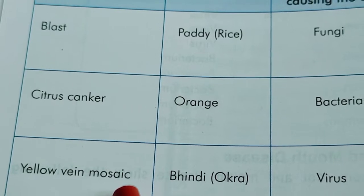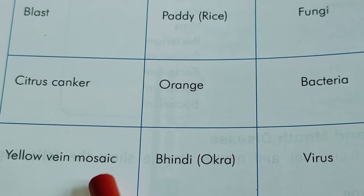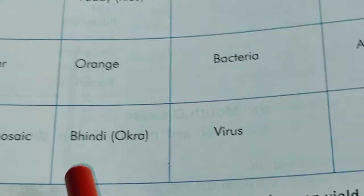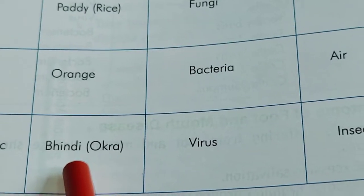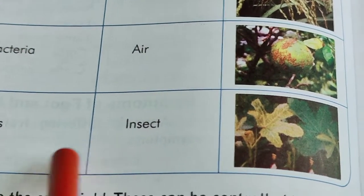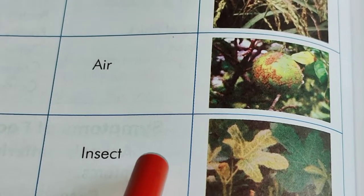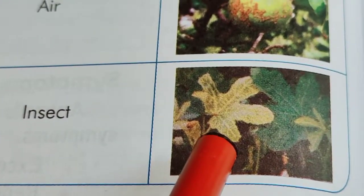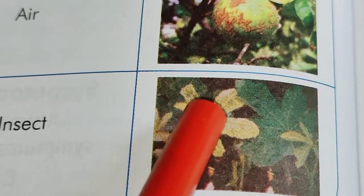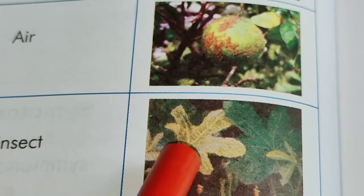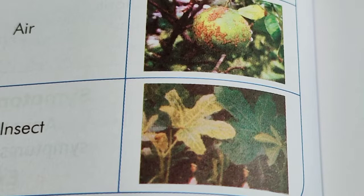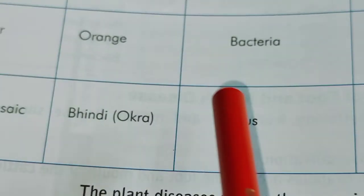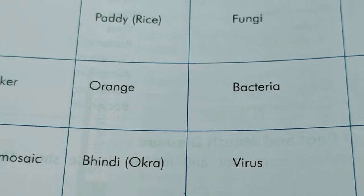Next is mosaic disease. Yellow vein mosaic disease infects the plant bhindi. It is a viral disease and spreads through insects. In yellow vein mosaic, a specialized pattern appears on the surface of the leaf and the leaf becomes yellowish. These are a few examples of plant diseases from the lesson.